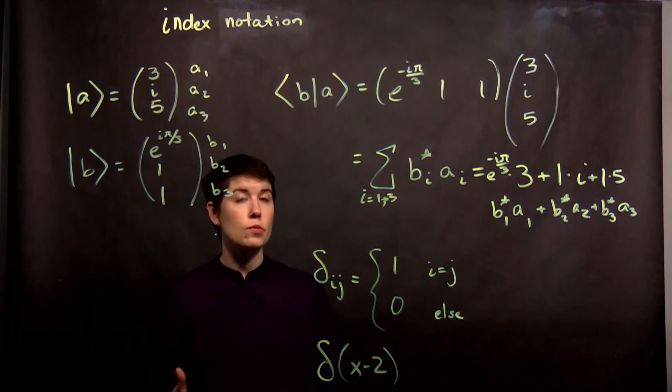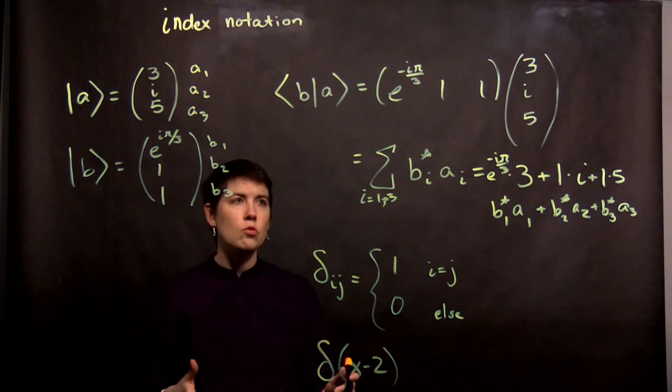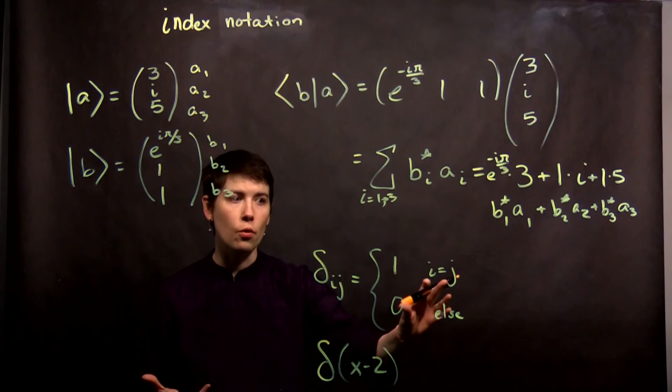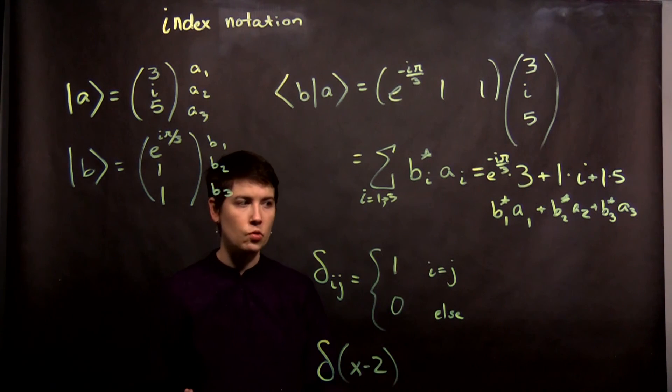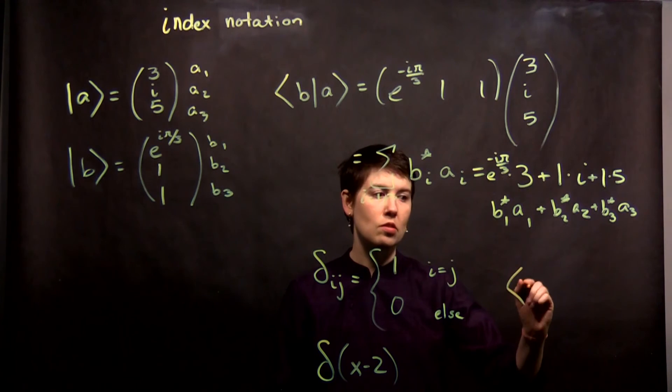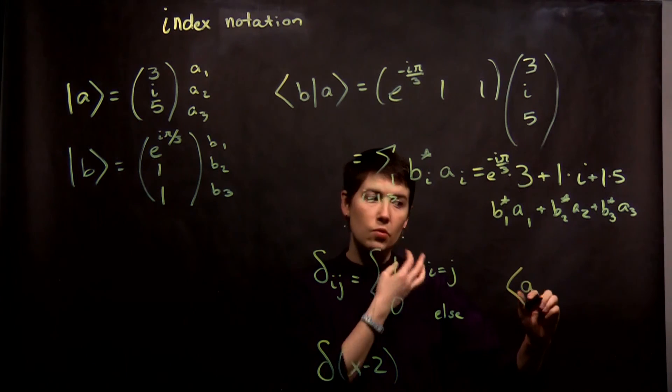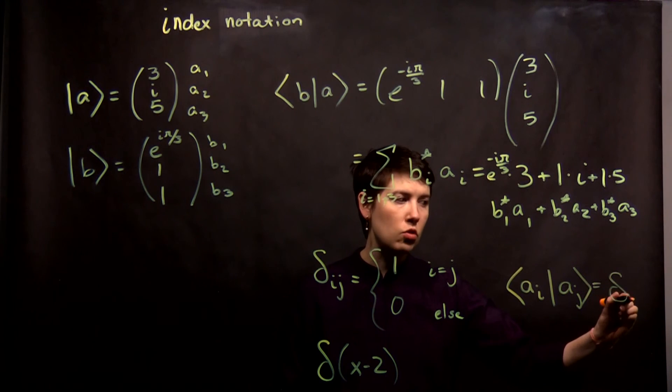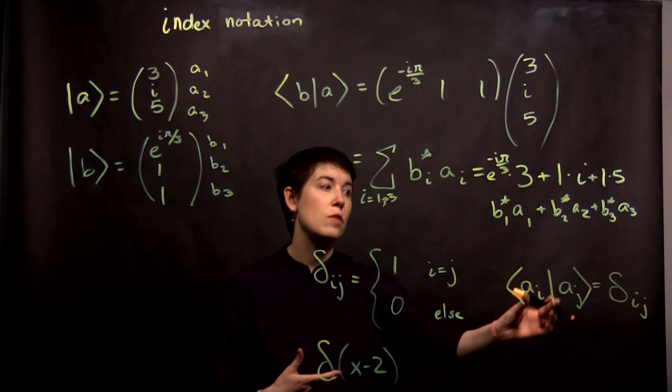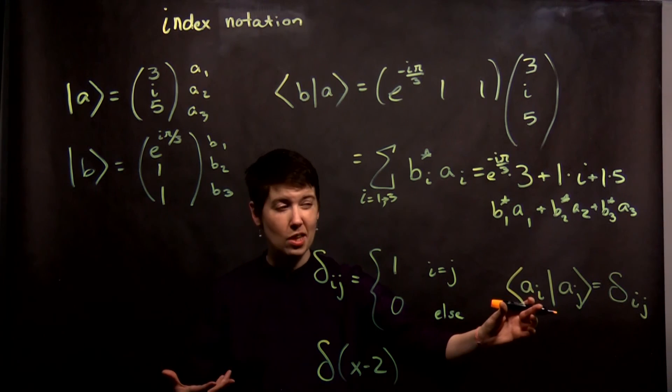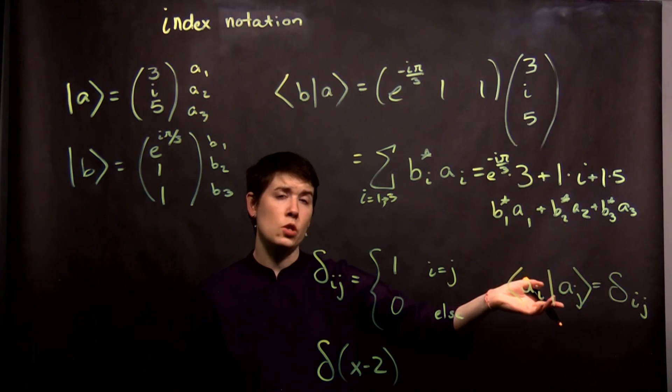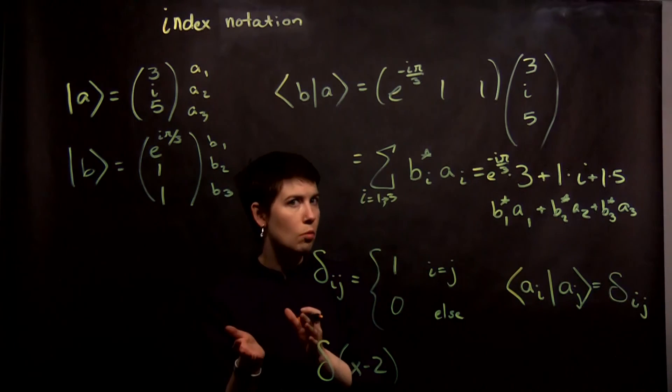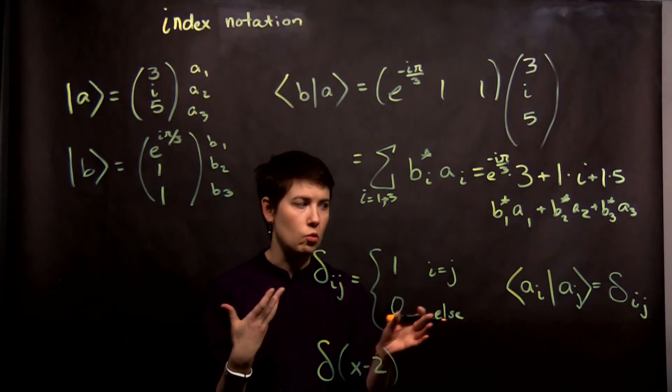And again, you'll see this come up in different types of index notation. So hopefully you've seen the summation symbol before and you're okay with this. And this delta function is 1 if they're the same, 0 else. And where this comes in, for instance, is if you have some sort of generalized state where this is ai aj. We would usually say that's just equal to the delta function. Meaning that if these are the same, if these are the same states, well then that's just the normalization condition. That's 1. Otherwise they're orthogonal. So this is another way of expressing orthonormality. So normalized if they're the same, 0 otherwise because they're orthogonal.